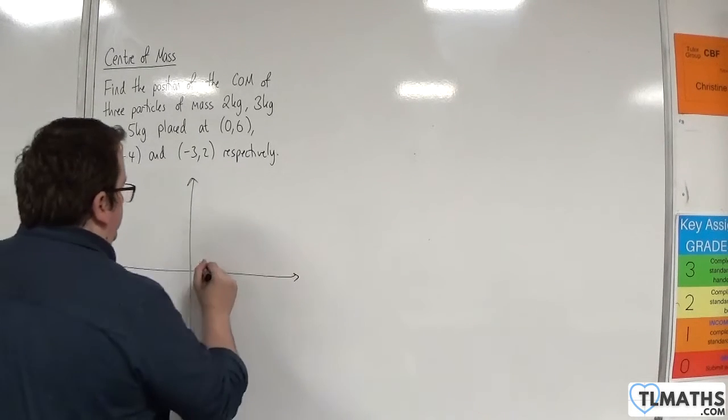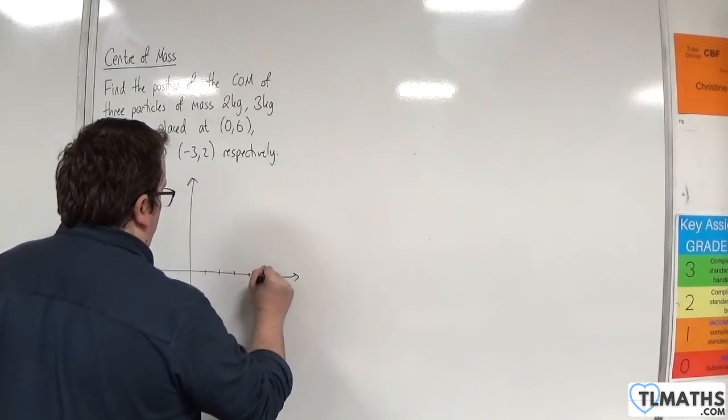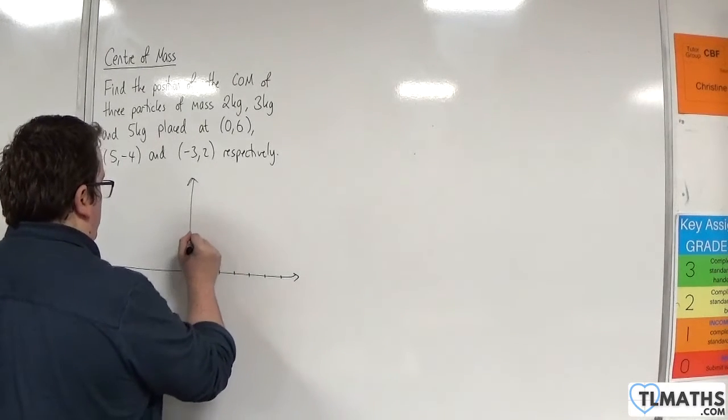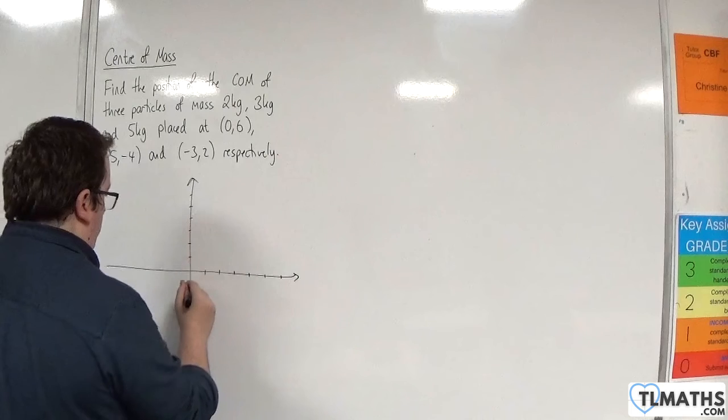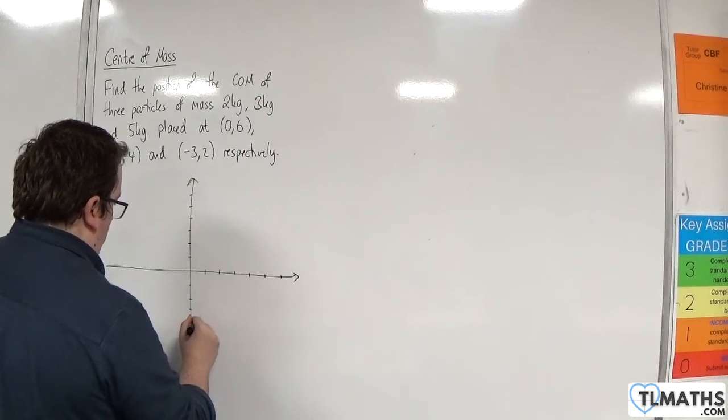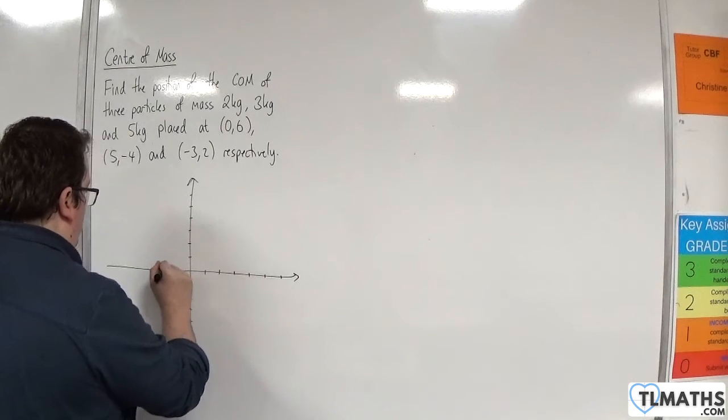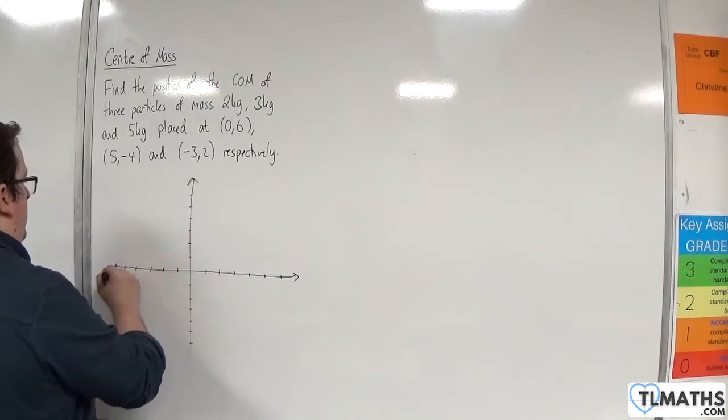Okay, so drawing the axes: 1, 2, 3, 4, 5, 6 on each axis.